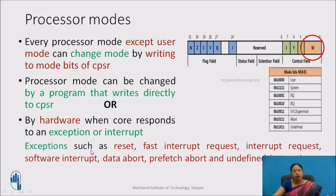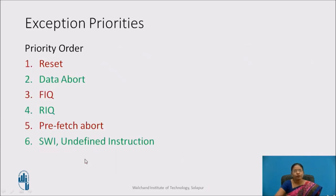Exceptions that occur include: reset, fast interrupt request, interrupt request, software interrupt, data abort, prefetch abort, and undefined instruction. These are the different exceptions. The hardware changes the mode when these exceptions occur. Reset is provided the highest priority, while software interrupt and undefined instructions are given the least priority.